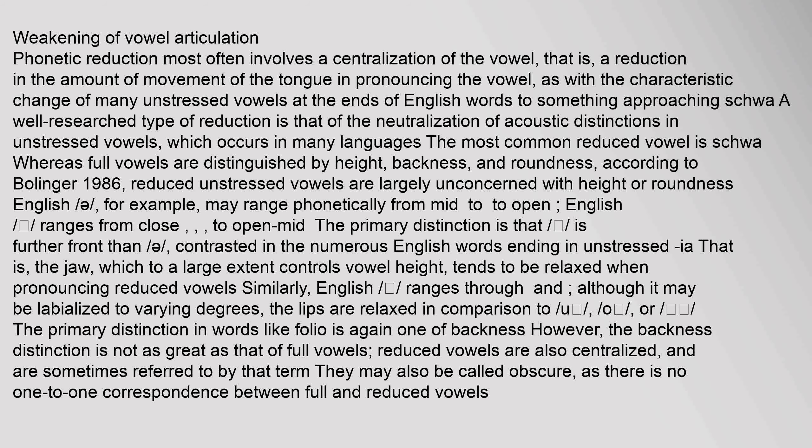English schwa may range phonetically from mid to open, while another reduced vowel ranges from close to open-mid. The primary distinction is one of frontness versus backness, contrasted in numerous English words ending in unstressed vowels. The jaw, which largely controls vowel height, tends to be relaxed when pronouncing reduced vowels. Similarly, the lips are relaxed in comparison to full rounded vowels. Reduced vowels are also centralized and are sometimes referred to by that term; they may also be called obscure, as there is no one-to-one correspondence between full and reduced vowels.